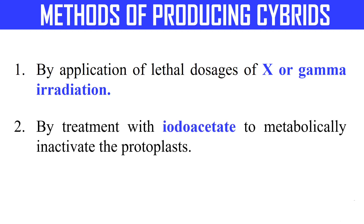The second method is by treatment with a metabolic inhibitor, for example iodoacetate. Iodoacetate inactivates the protoplast. We pre-treat our protoplast with iodoacetate, which causes the degeneration of non-fused and auto-fused protoplasts. The fusion of this iodoacetate pre-treated protoplast with a non-treated protoplast causes metabolic complementation and ultimately results in viable hybrids. The iodoacetate treatment does not impair the nucleus of the non-treated protoplast, so the latter can complement the X-ray-treated protoplast. Thus, using this metabolic inhibitor we can also create cybrids.